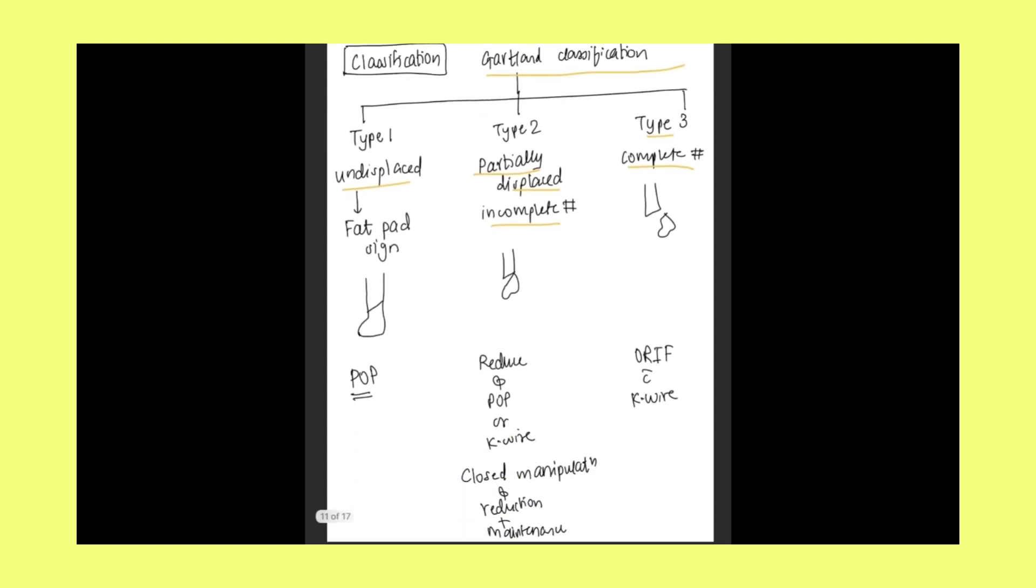Type 1 on radiology, we will be seeing fat-pad sign. Coming to type 2, the posterior cortex is attached. It is incomplete fracture. While type 3 is complete fracture and displacement has taken place.